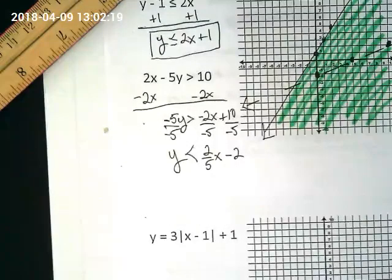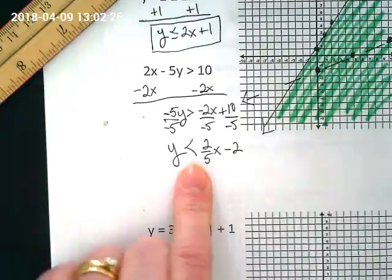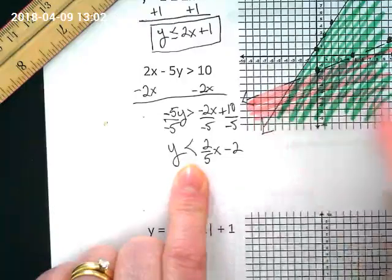Where does my shading go? Y underneath. It says y is less than, so I'm going to shade underneath the dashed line in a different color.